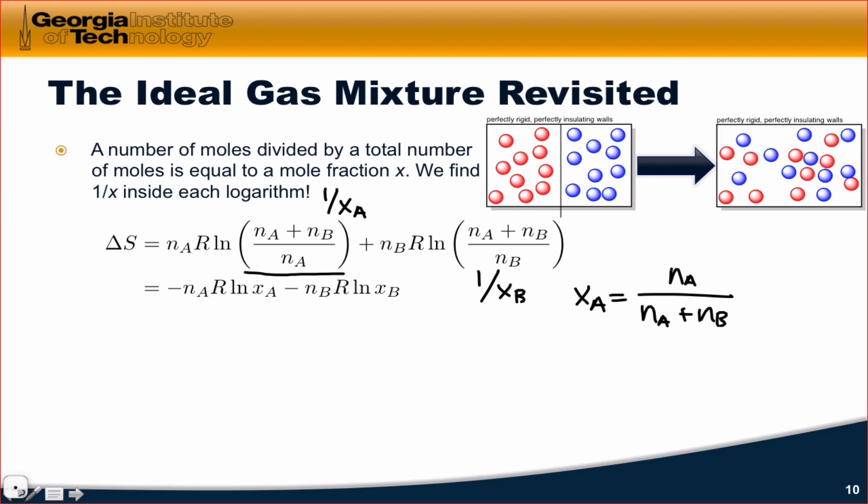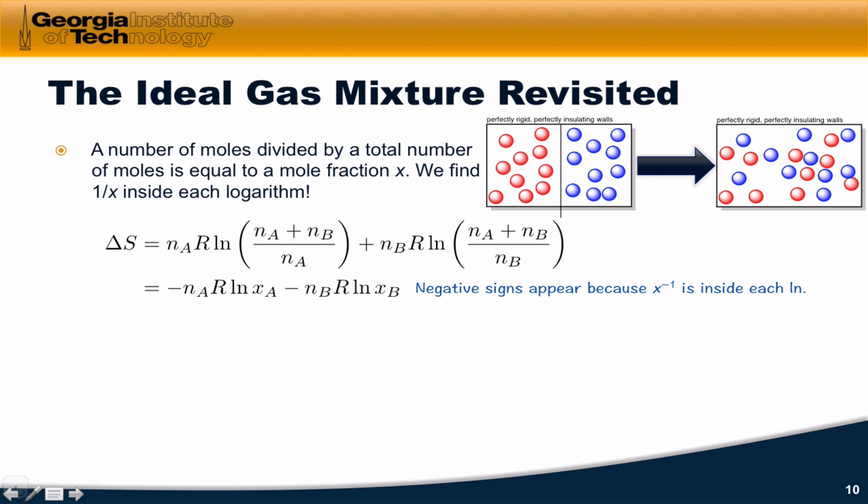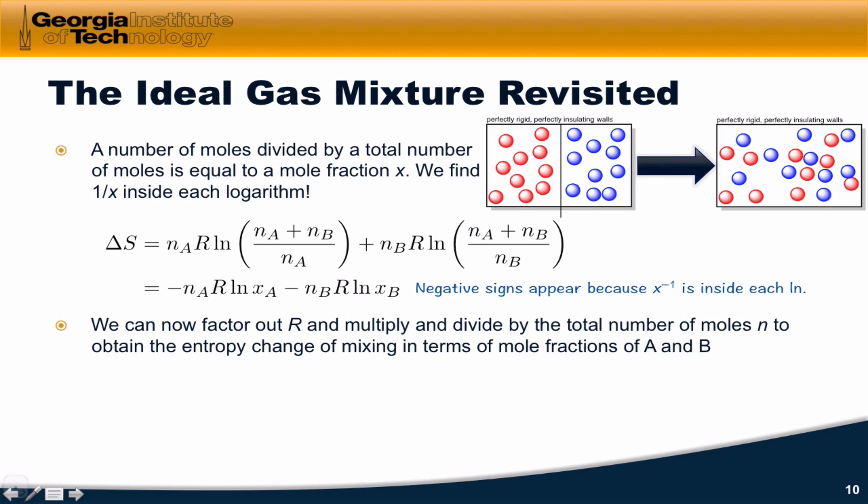So we can replace what's inside the natural logarithm with 1 over XA and 1 over XB, and realize that this is just XA to the negative 1 power, and this is XB to the negative 1 power, and write that delta S, the total entropy change inside the isolated system, is negative N sub A times R times the natural log of X sub A minus N sub B times R times the natural log of X sub B. And the negative signs appear in front of each term, because a mole fraction to the negative 1 power is inside each logarithm.